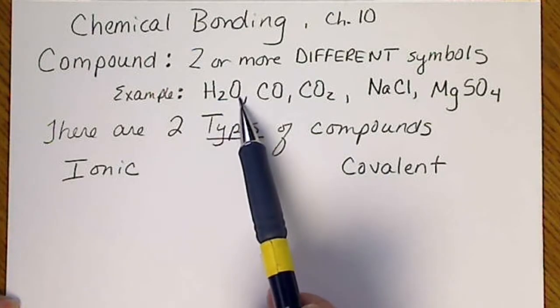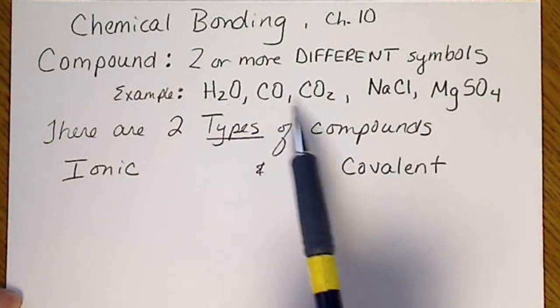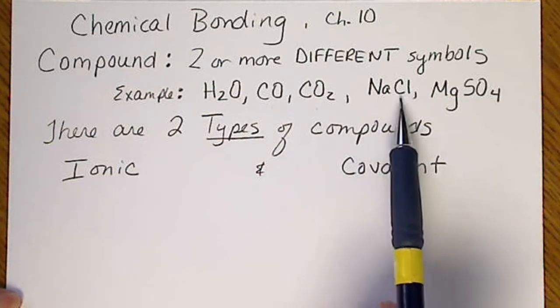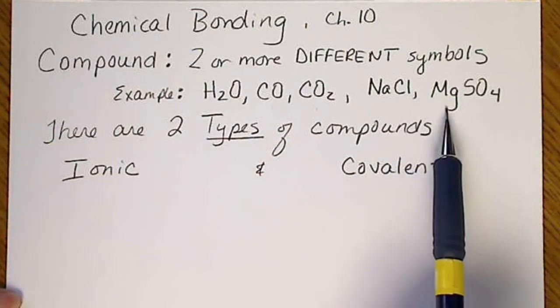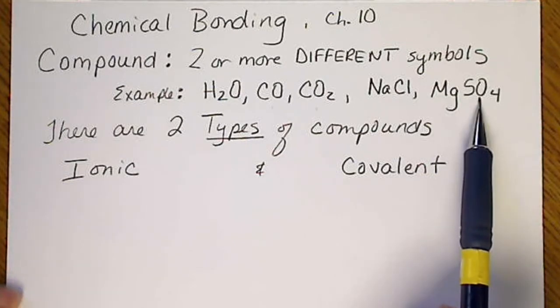So hydrogen and oxygen are different. This is H2O water, carbon monoxide, carbon dioxide, or sodium chloride. This is Epsom salt, which has the name magnesium sulfate.